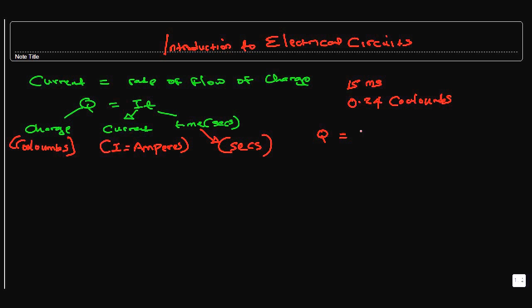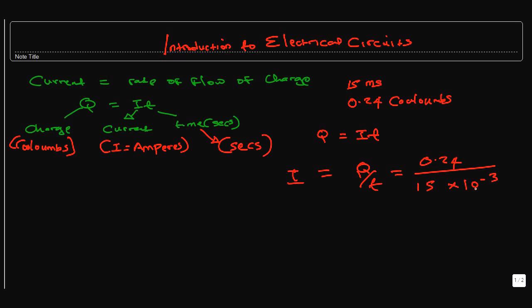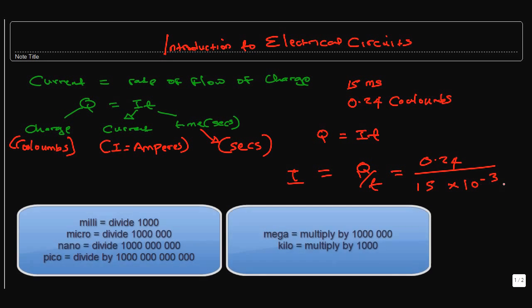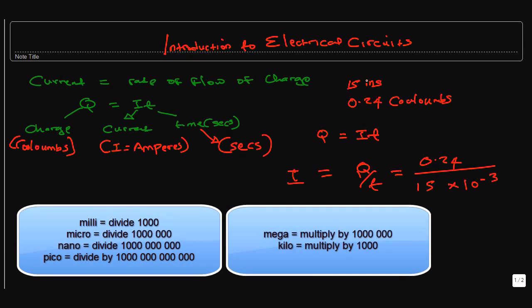We know that Q = I×t, so I = Q/t. That gives us 0.24 divided by 15 times 10 to the minus 3. We have 10 to the minus 3 because of the milliseconds.